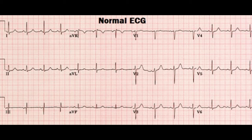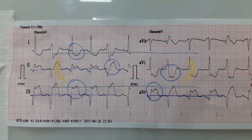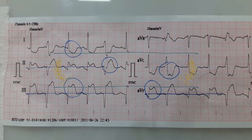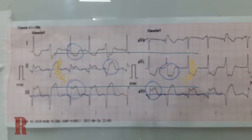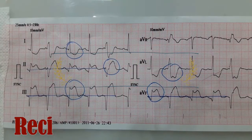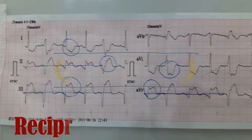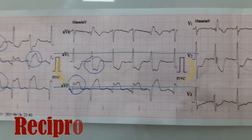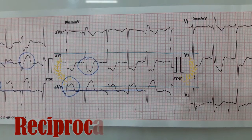Many theories have been advanced to explain reciprocal changes. The most important mechanism for ST depression is associated with continuous subendocardial ischemia. Here we have this ECG — you can note ST elevation in certain leads.